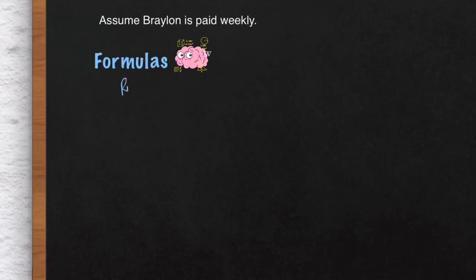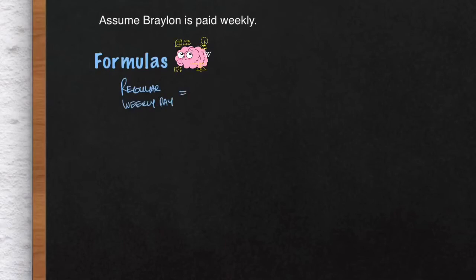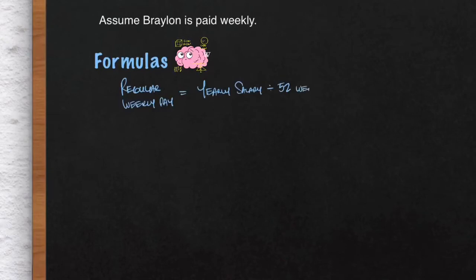Let's look over the formulas required to solve this problem. The first one is calculating his regular weekly pay, or regular pay. What you want to do here is take his yearly salary and divide that by 52 weeks, because there are 52 weeks in a year. Once you do that, you'll get his weekly pay.